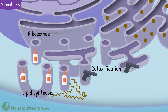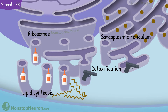It's also abundant in liver cells, where it is involved in detoxification. Harmful substances produced by the body or those that enter from outside are detoxified by enzymes present on the smooth endoplasmic reticulum. In muscle cells, the smooth endoplasmic reticulum exists in a modified form called the sarcoplasmic reticulum, which stores calcium and plays a role in intracellular signaling.